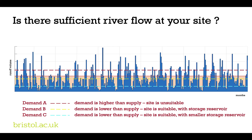For demand C, the demand is lower than the supply again, so the site is suitable. But again, there are some periods when the flow dips below that demand, so some storage capacity is needed — though the amount of storage will be less than for demand scenario B. To summarise: demand A is above the mean flow so the site is not suitable; for demands B and C the site is suitable, but demand B would require a larger storage reservoir than demand C.